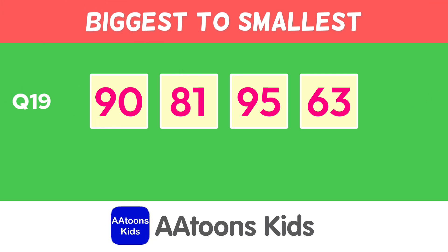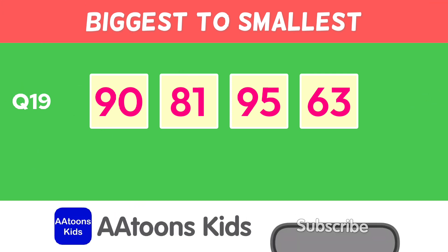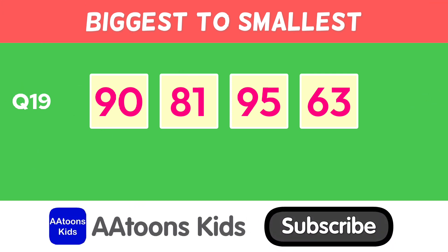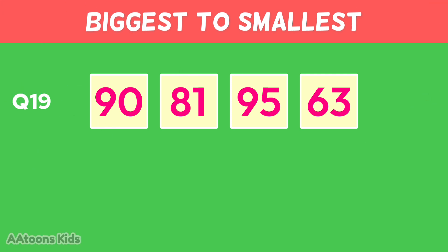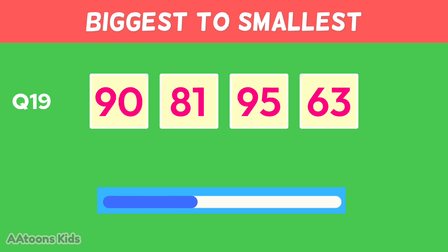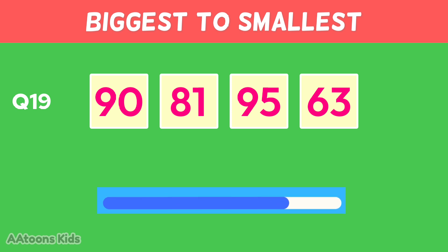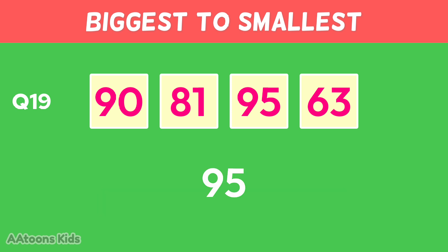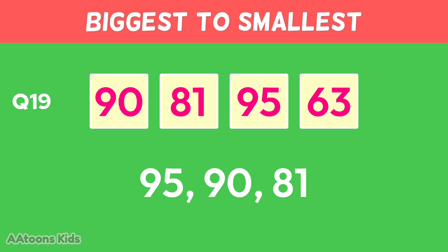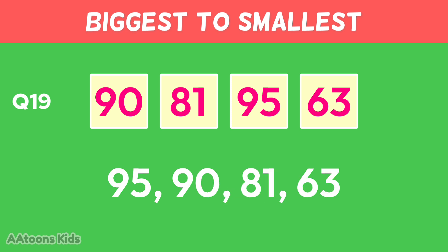Arrange these numbers from biggest to smallest: ninety-five, ninety, eighty-one, sixty-three.